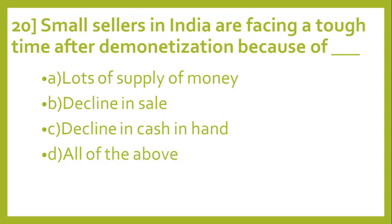Question number 20: Small sellers in India are facing a tough time after demonetization because of? A: Lots of supply of money. B: Decline in sale. C: Decline in cash in hand. D: All of the above. And the answer is C, Decline in cash in hand.